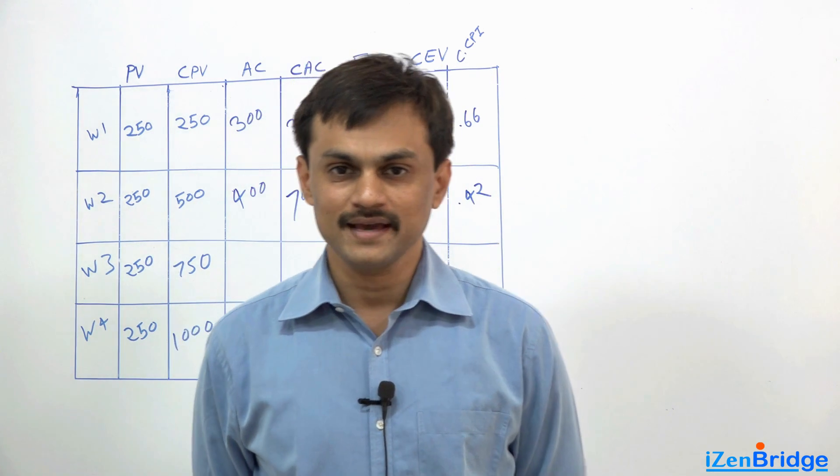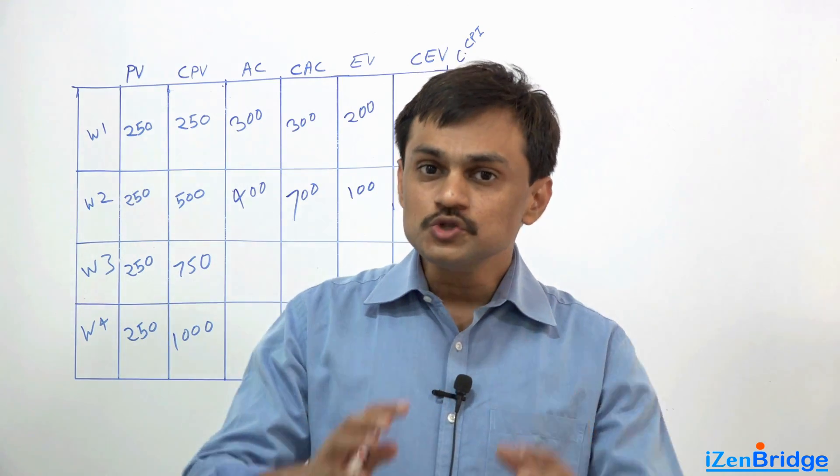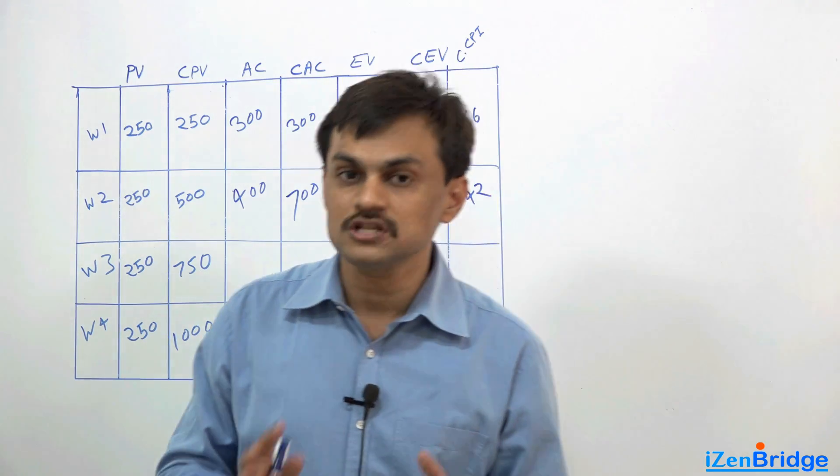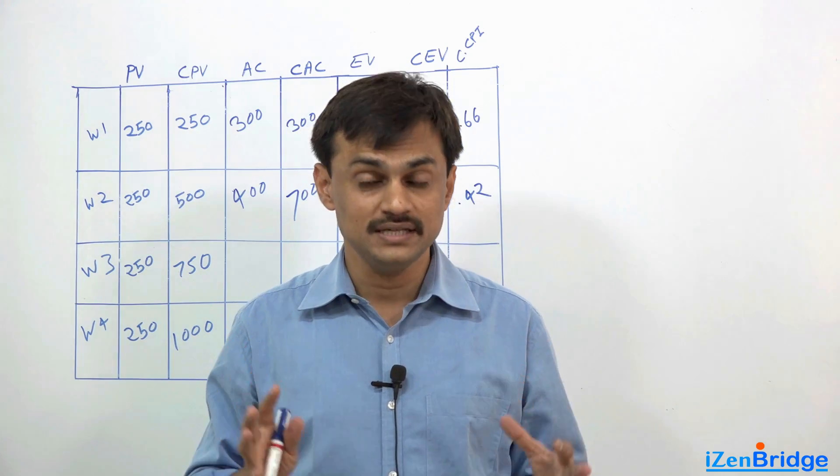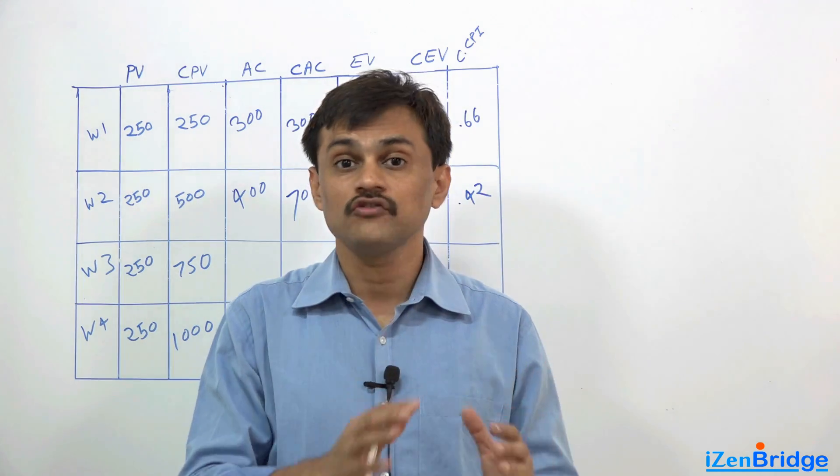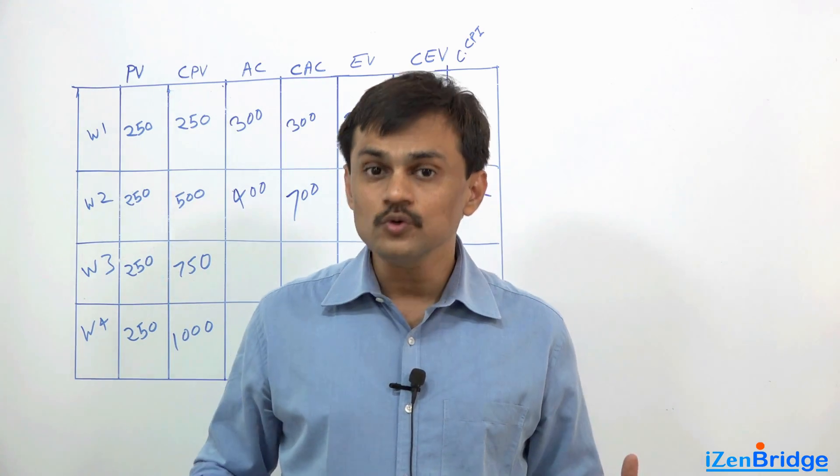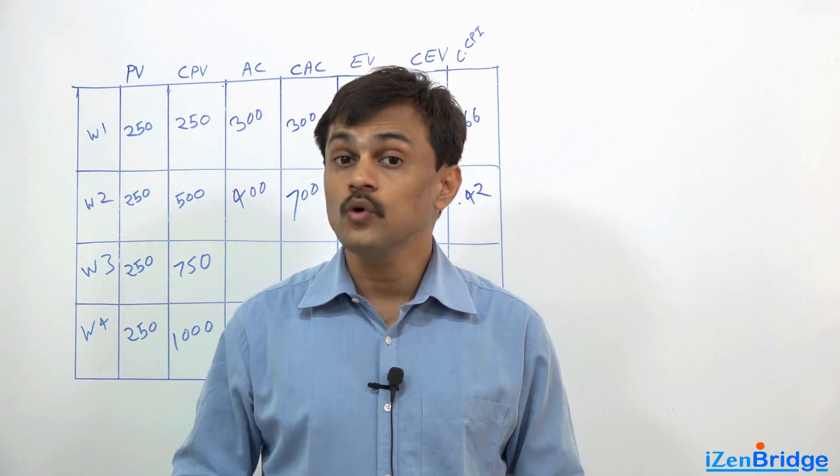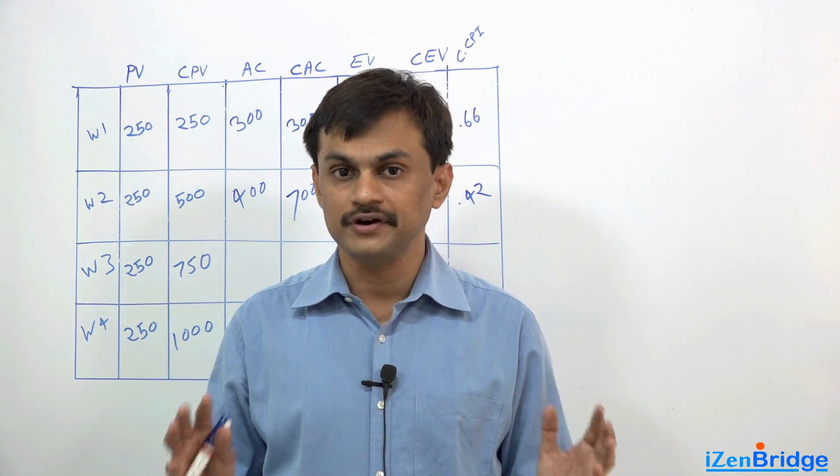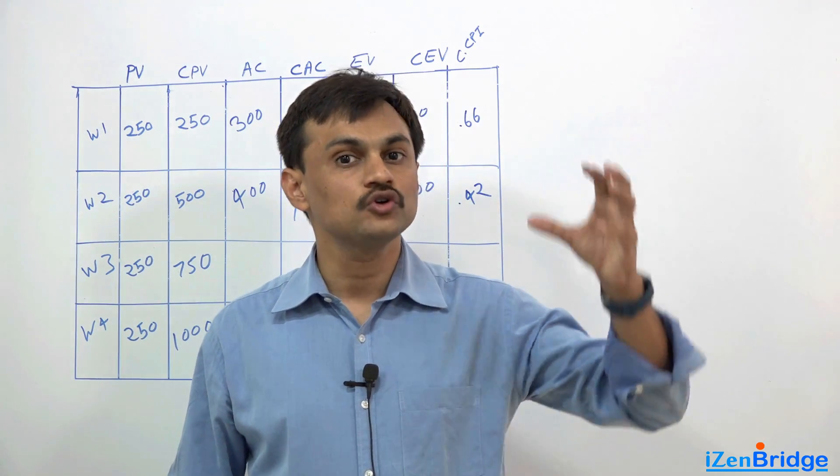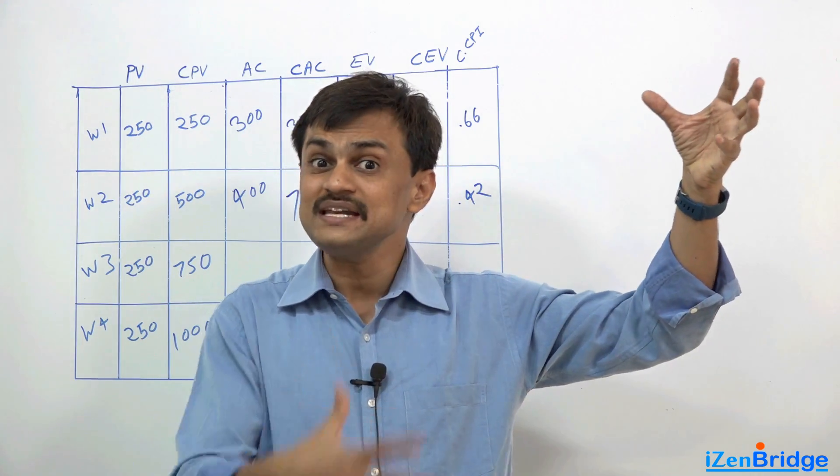To Complete Performance Index is about what should be our desired cost performance index in order to meet our goal of achieving the project in a given budget. The formula for To Complete Performance Index is simple: work remaining divided by fund remaining - how much amount of work left and how much money left.